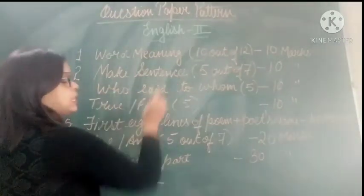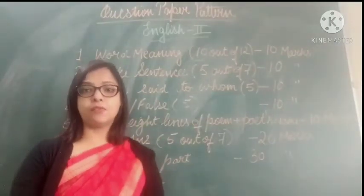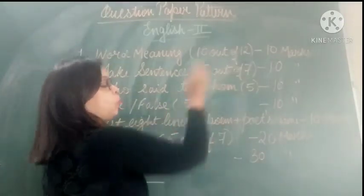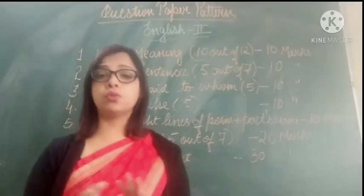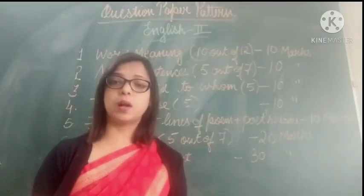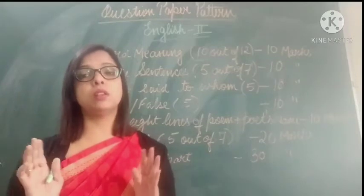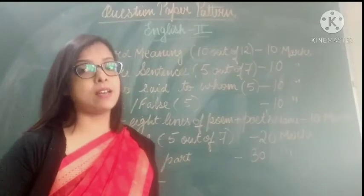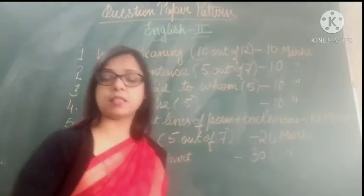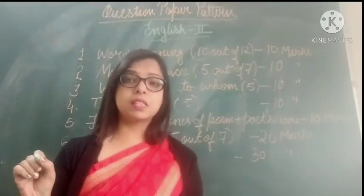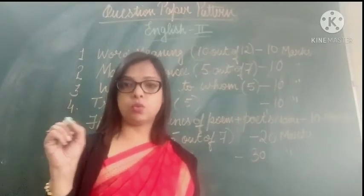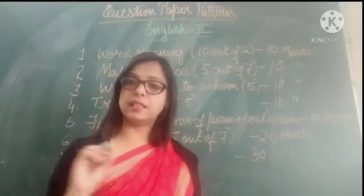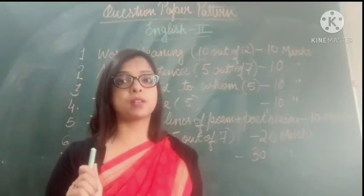The next question is make sentences. I have already given you those words — you have to learn them. 7 will come, and you have to do any 5 out of 7. Learn all the words and make sentences given to you since you don't know which will come. This is also of 10 marks. Remember, when you write the sentence, you have to underline the word used, otherwise your marks will get cut.